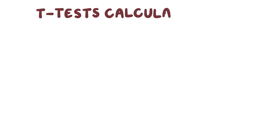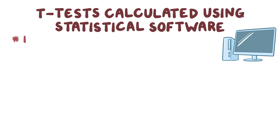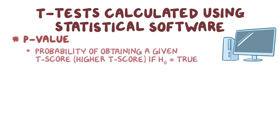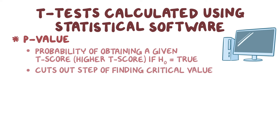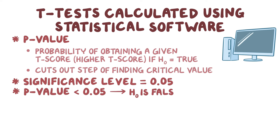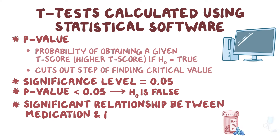T-tests are most often calculated using statistical software, and the software will often provide a p-value. This p-value is the probability of obtaining a given t-score, or a higher t-score, if the null hypothesis is true. In short, the p-value cuts out the step of finding the critical value. So if we use a significance level of 0.05, then a test with a p-value of less than 0.05 will indicate that the null hypothesis is false and that there is a significant relationship between medication and blood pressure.